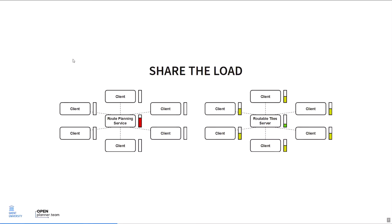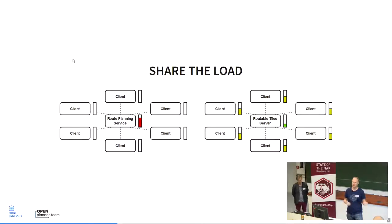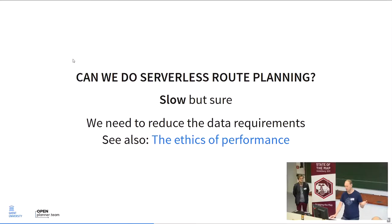Why are we doing this? On the left you see a classic route planning service — the server is doing a lot of work while all clients ask for routes. We want to share the load between server and client. What we've done is reduce the server to just publishing data, and the clients do the route planning. One trade-off is privacy: the server will never know the origin and destination, only what area you download. Also, the client can configure routing profiles dynamically.